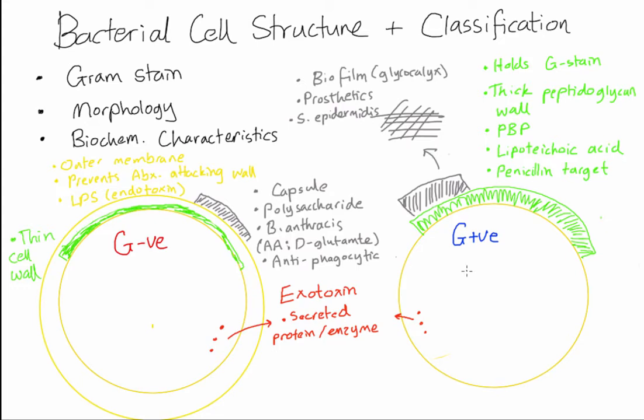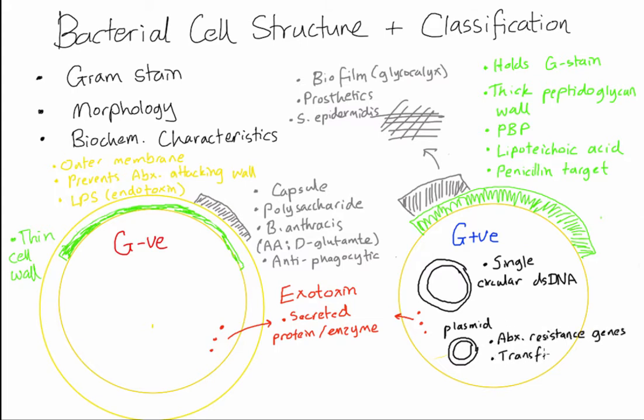Inside the cell we have double stranded DNA in a single circle. That's the main DNA for the bacteria. And then it has plasmids and these are smaller double stranded DNA circles. And two things about plasmids: one, they carry antibiotic resistance genes, and two, they can be transferred between bacteria. That's how resistance spreads.